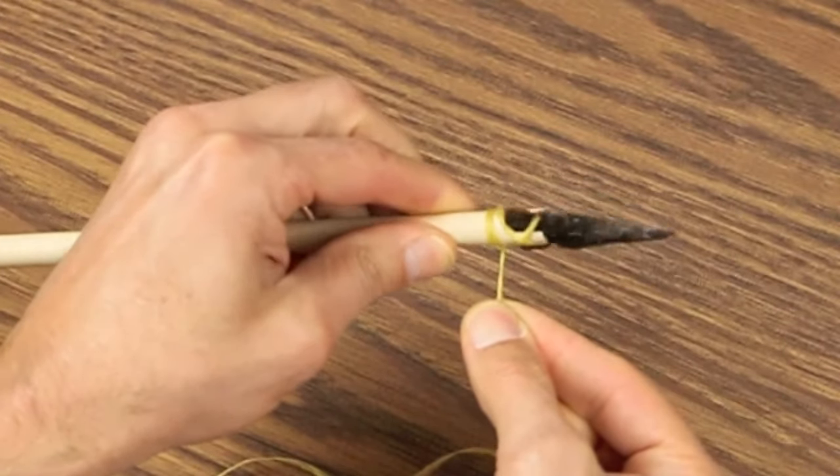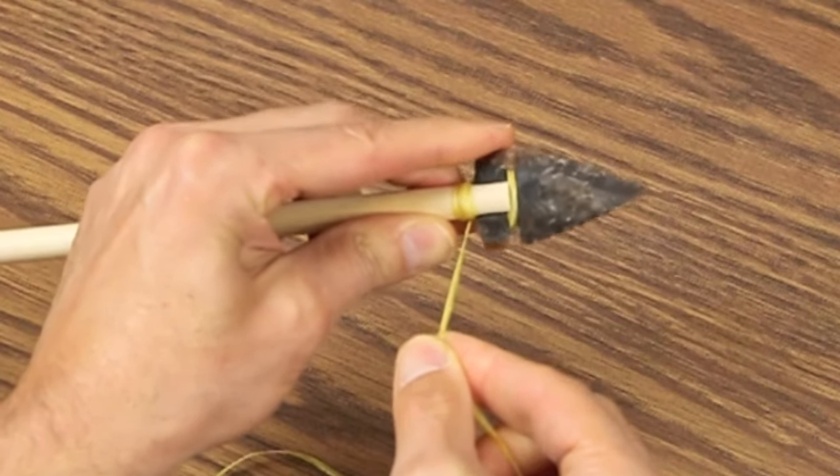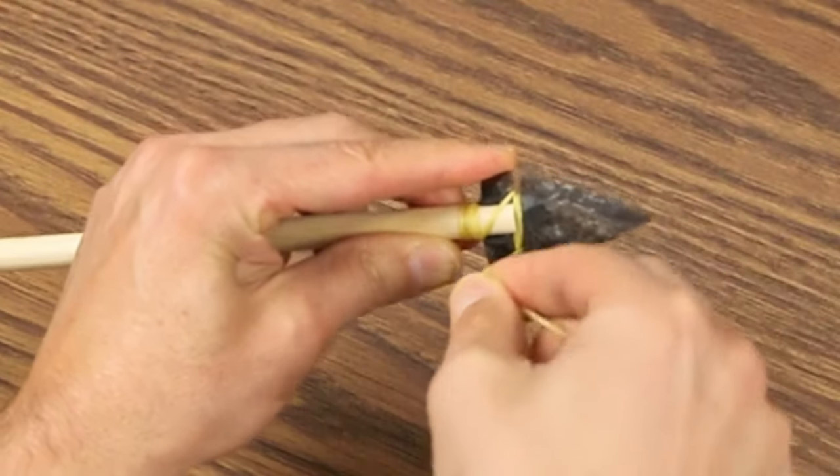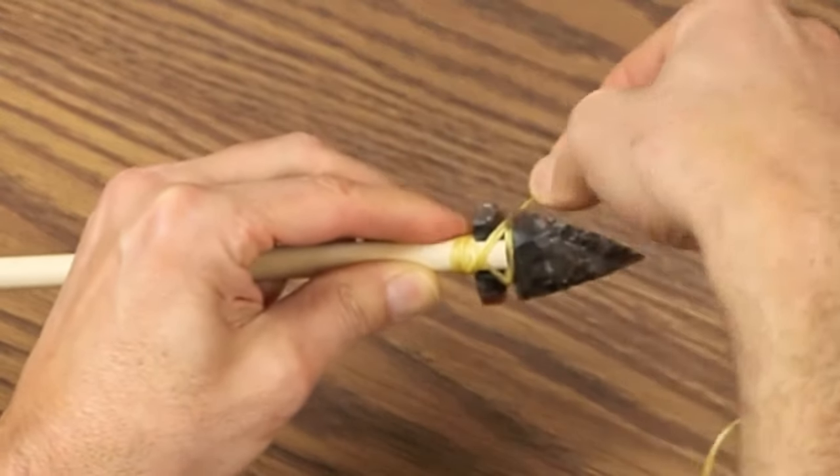This time, you're going to roll the shaft towards you, and now you can look at it from the back. Line it up again, go through the notches, cross over, repeat that again.